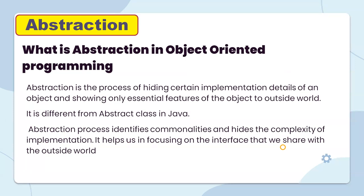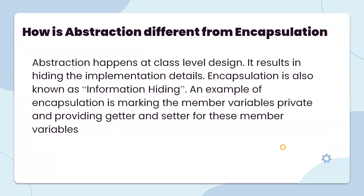What is abstraction in object-oriented programming? Abstraction is the process of hiding certain implementation details of an object and showing only the essential features of the object to the outside world. Abstraction identifies commonalities and hides the complexity of the implementation, helping us focus on the interface shared with the outside world. How is abstraction different from encapsulation? Abstraction happens at the class level design and results in hiding implementation details, while encapsulation is also known as information hiding — for example, making member variables private and providing getters and setters.